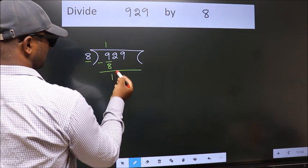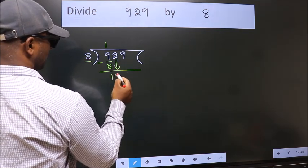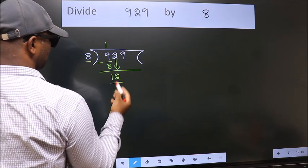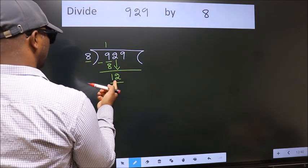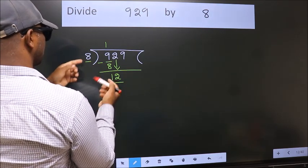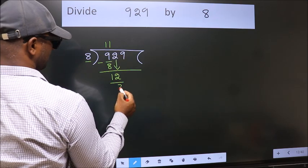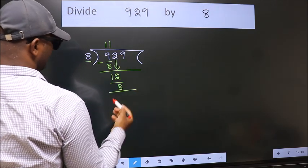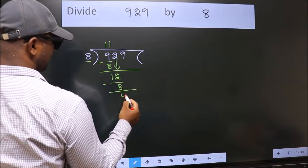After this, bring down the beside number. So 2 down. So 12. A number close to 12 in 8 table is 8 once 8. Now we subtract. We get 4.